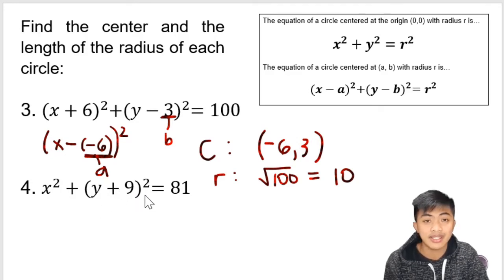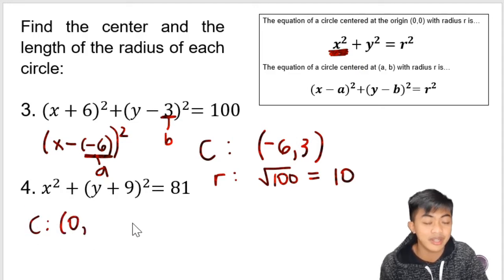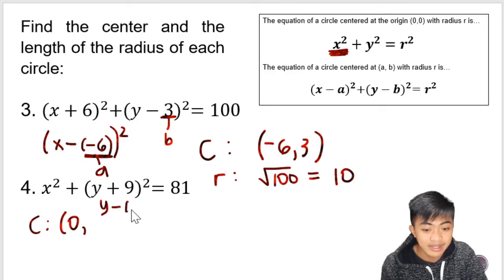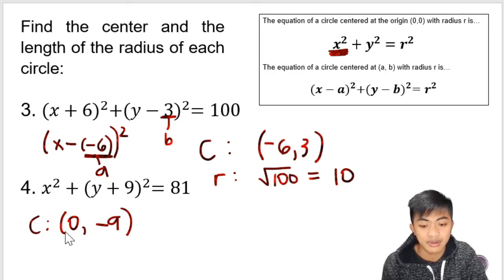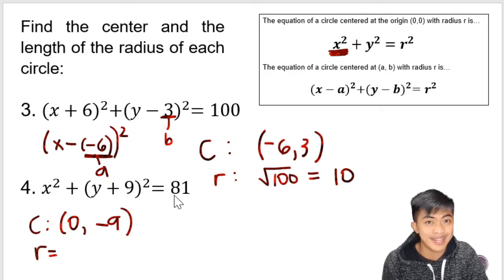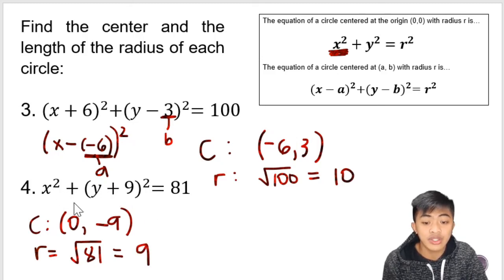Let's go to the next example: x squared plus the quantity y plus 9 squared is equal to 81. Here, it's just x squared, so it is similar to the origin form — we can say that the x-coordinate is 0. For the y-coordinate, since this is plus we read it as y minus negative 9. That number after the minus sign is negative 9. So the center is at (0, negative 9). For the radius, we take the square root of 81, which is 9 units. So the center is (0, negative 9) and the radius is 9 units.